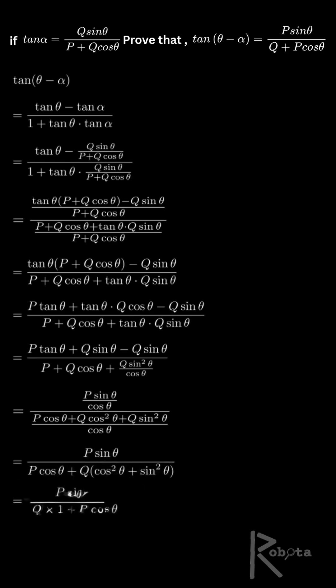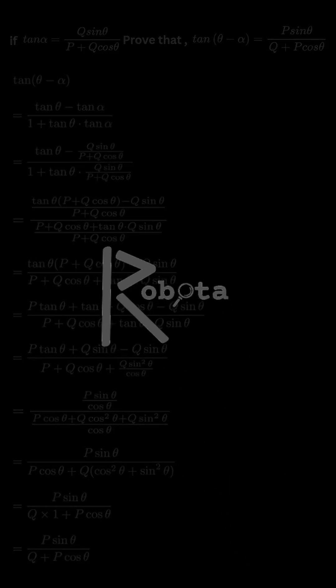This simplifies the denominator to p cos theta plus q, the numerator to p sine theta, and the denominator to q plus p cos theta. Therefore, tan of theta minus alpha equals p sine theta over q plus p cos theta. The question is solved.